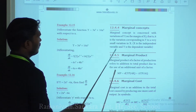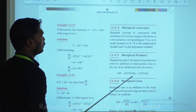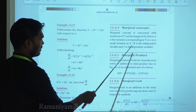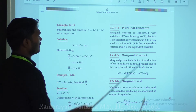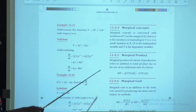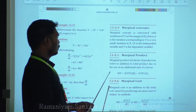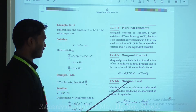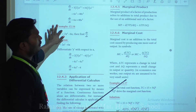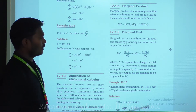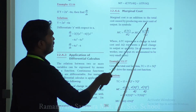Next, marginal concepts. A marginal concept is concerned with the variation of y — that is, the variation corresponding in y to a very small variation in x, where x is the independent variable and y is the dependent variable. Marginal product of a factor of production refers to the addition to the product due to the use of an additional unit of factor. MP = dTP/dQ = ΔTP/ΔQ.